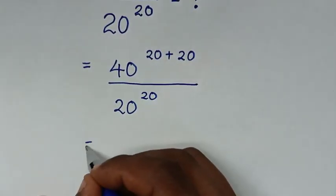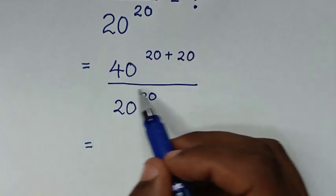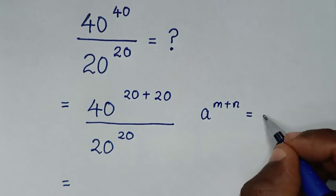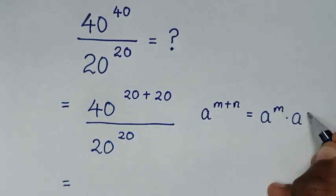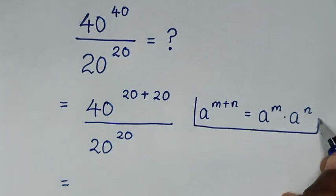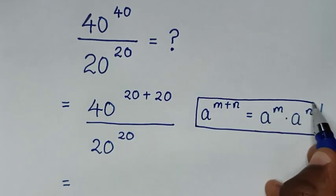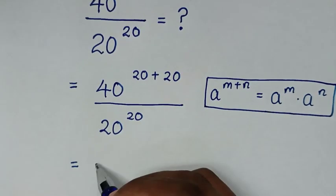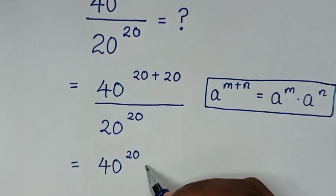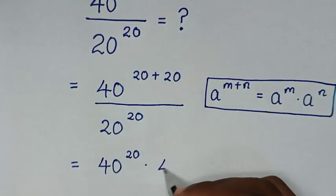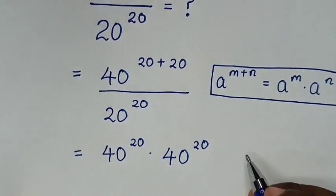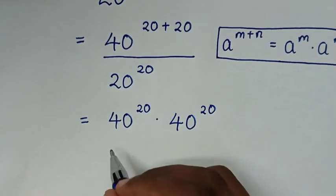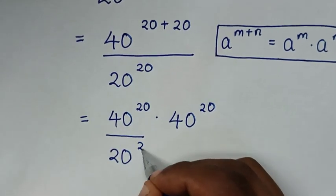Then in the next step, the exponent in the numerator is in the form of a power of m plus n, which is equal to a power of m times a power of n. We will apply this form here, so it will be 40 power of 20 times 40 power of 20, divided by 20 power of 20.